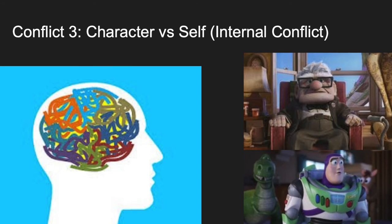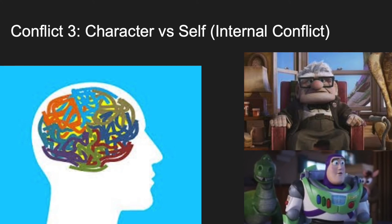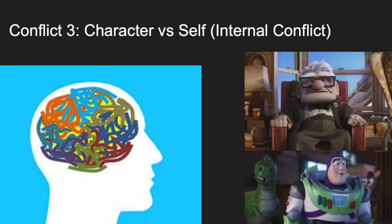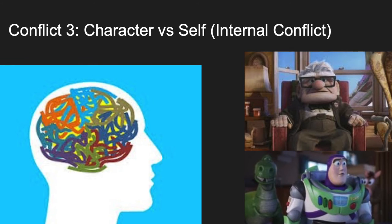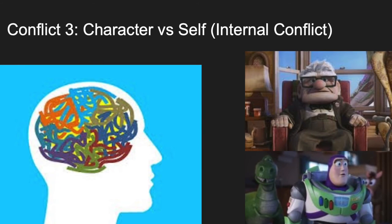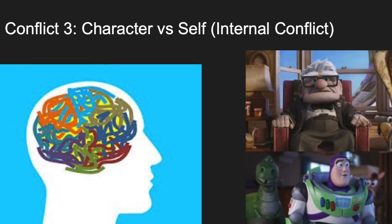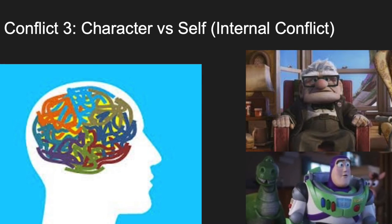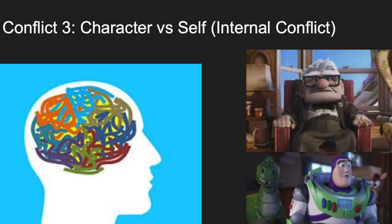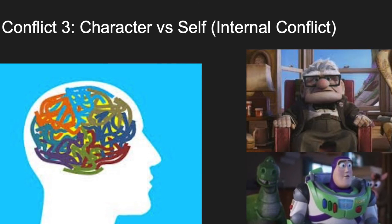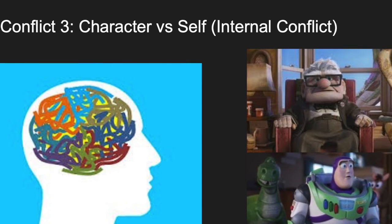The final conflict I'd like to discuss today is an example of an internal conflict, also known as a character versus self conflict. We have more examples on the right, that being Buzz Lightyear from Toy Story and Carl from Up. In this story, the man is shown to have a very strong moral dilemma, as shown by his actions throughout the story. These can range from him being kind-hearted, to questionable, to violent.